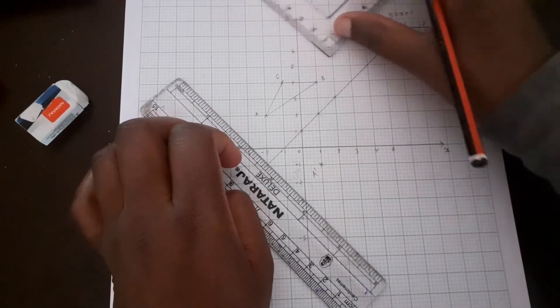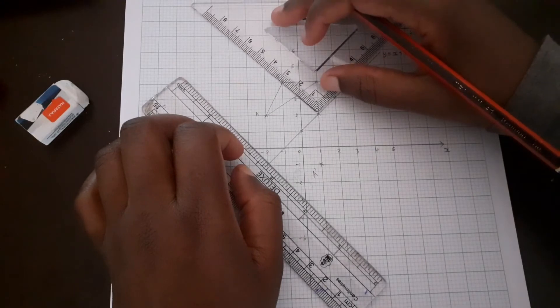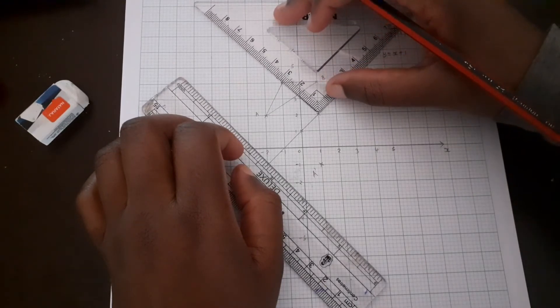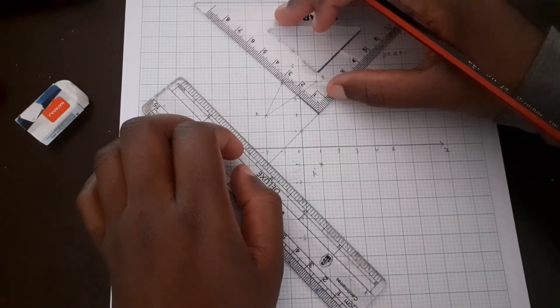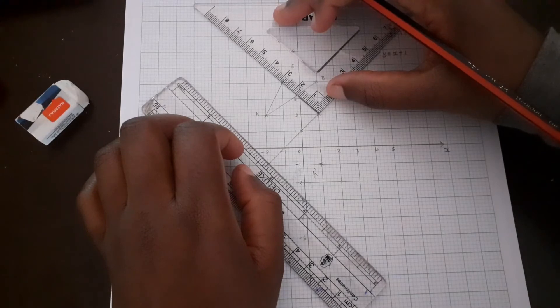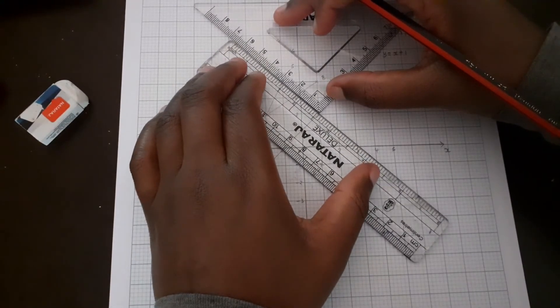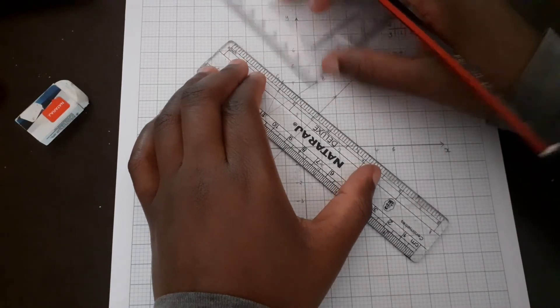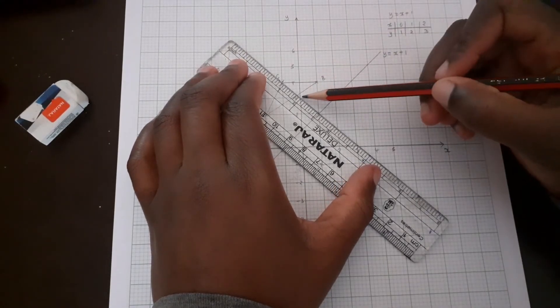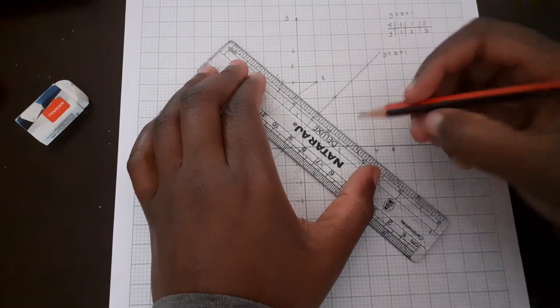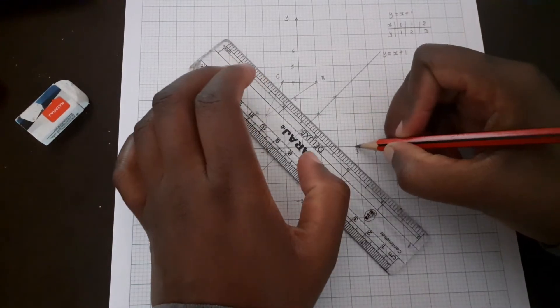This is A'. Then we do the same for the other points. For C, this is one, two. You count two steps on the opposite direction. This is the point, this is C'.